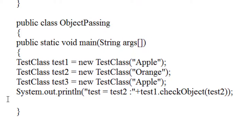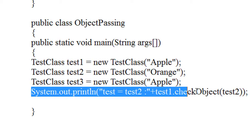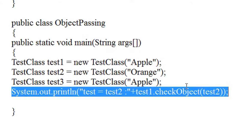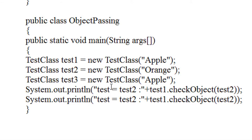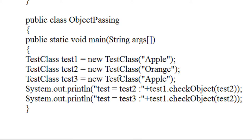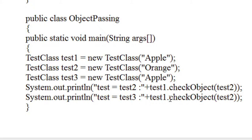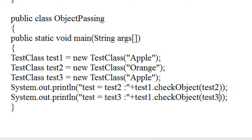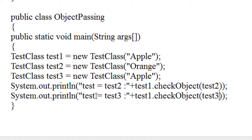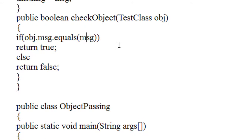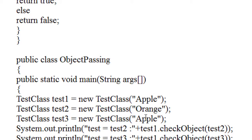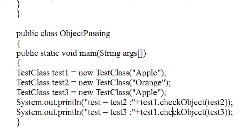So again I compare — I am going to compare test1 and test3. I pass test1.checkObject(test3). In this case, the two values — obj.msg and msg — are both apple, so in that case it will return true.